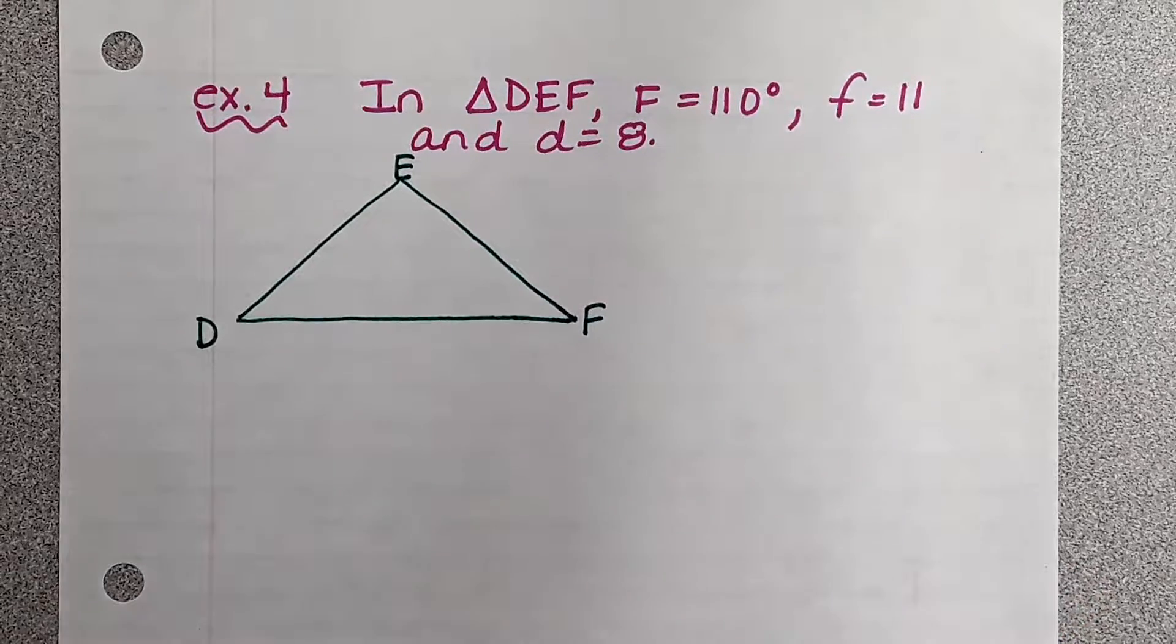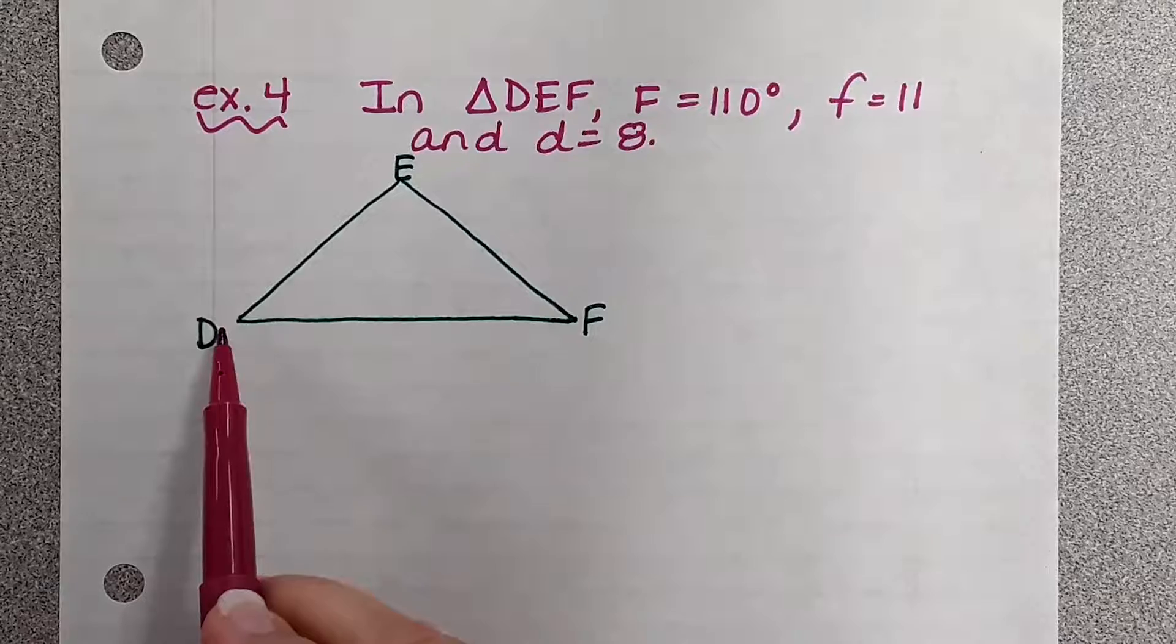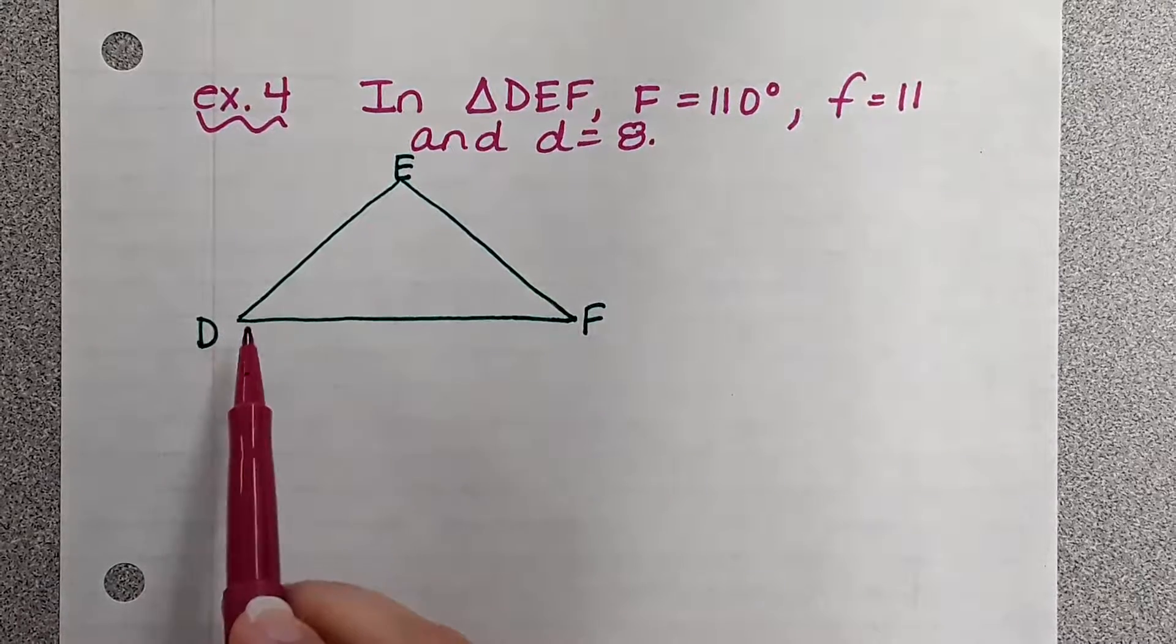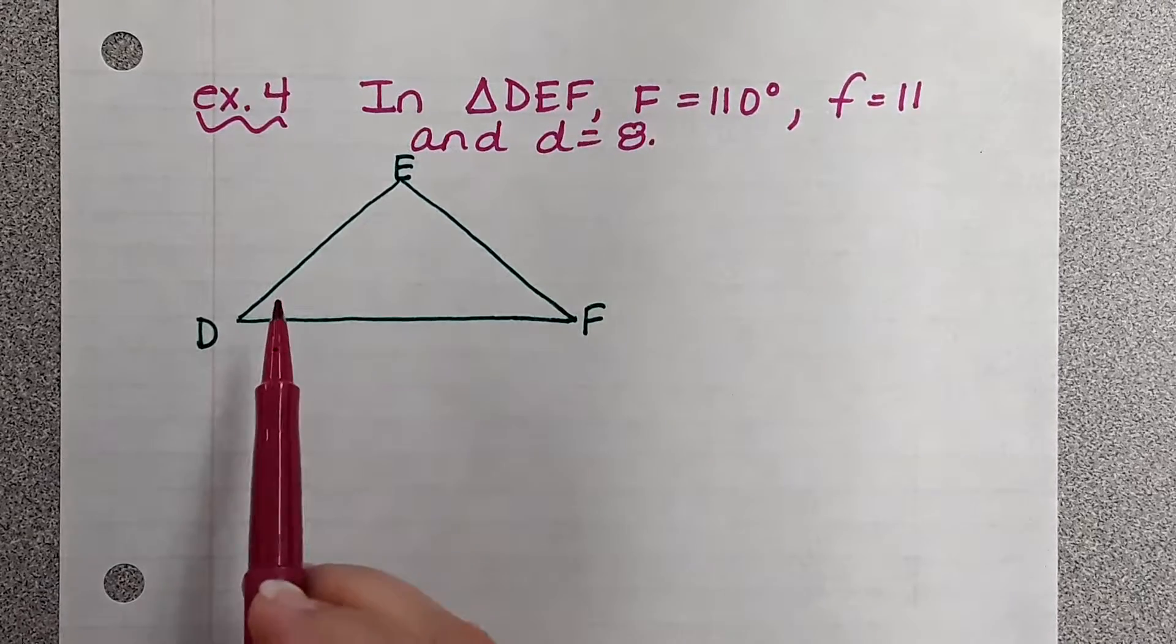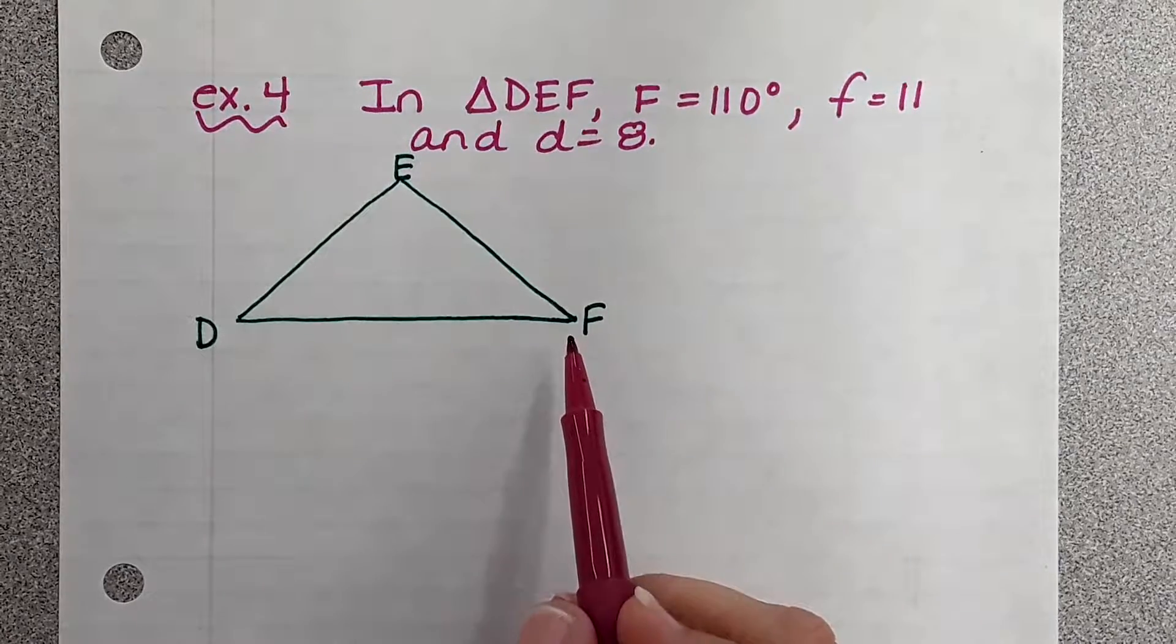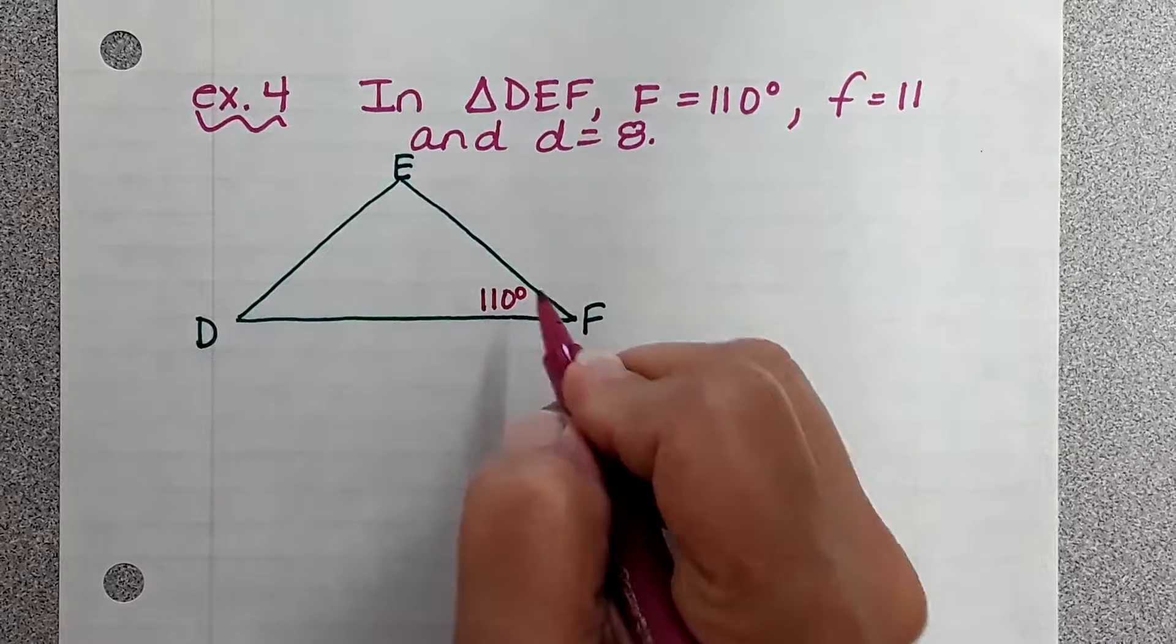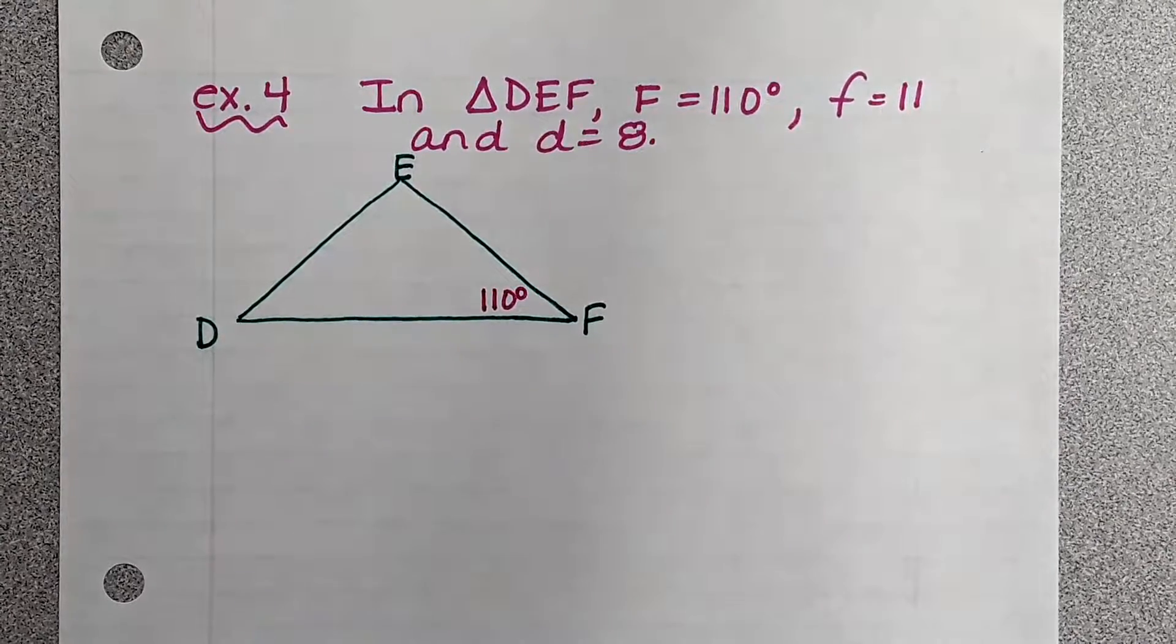So now let's fill in the information we know. Do we know angle D? Did they give us angle D? Did they give us angle E? What about angle F? Angle F is 110 degrees. That does not look like 110 degrees, but we're going with it.